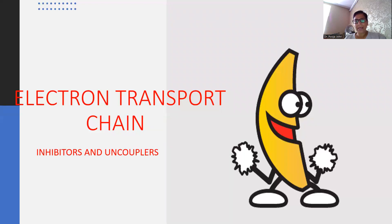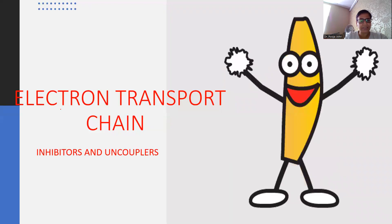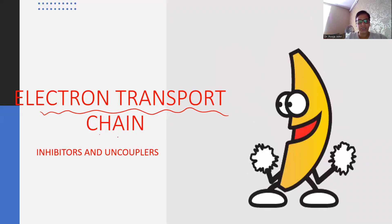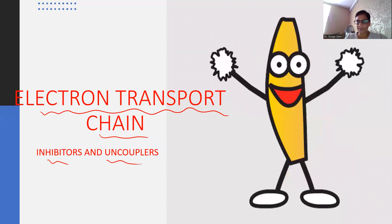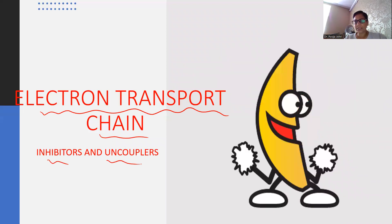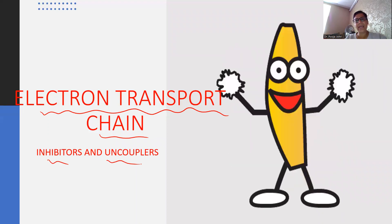So what do you mean by the term electron transport chain? As it is clear from the word itself, there is transport of electrons via a chain. Electrons are negatively charged. These electrons actually combine with protons, which are positively charged, in the presence of oxygen to form water. And this is the basis of this electron transport chain. Today in this video, we will be discussing the inhibitors and uncouplers, because most students get confused between inhibitors and uncouplers.